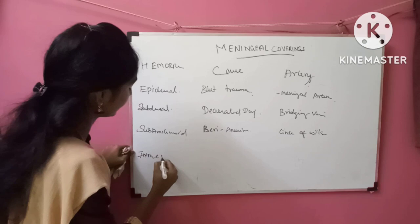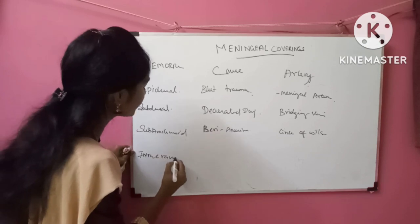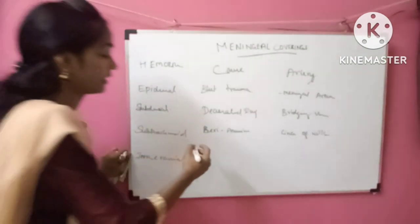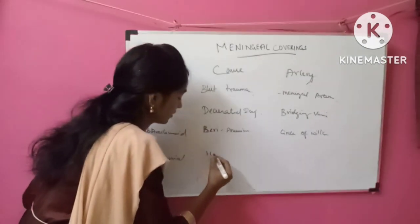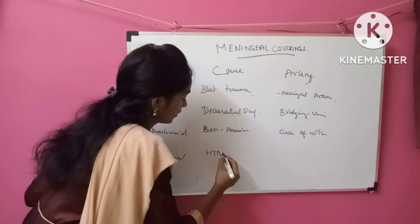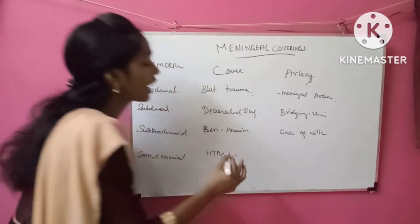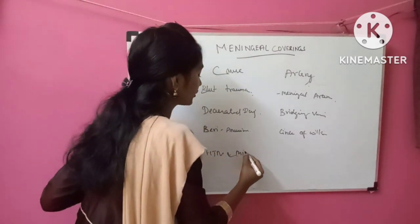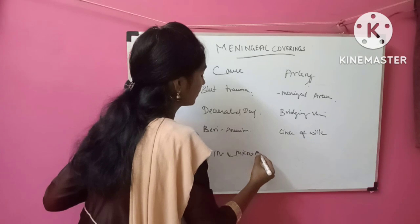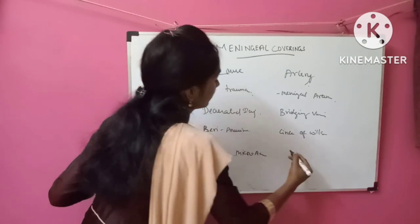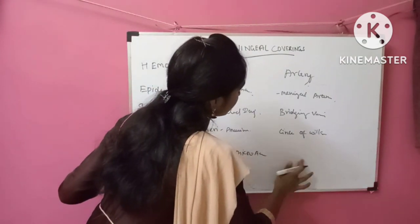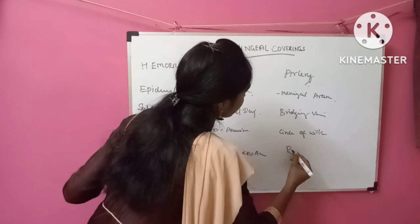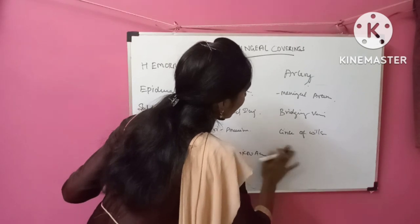Last, intracranial hemorrhage — it is usually caused by hypertension. Due to hypertension there will be a microaneurysm and rupture of the cerebral artery.